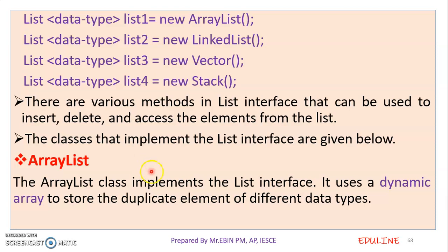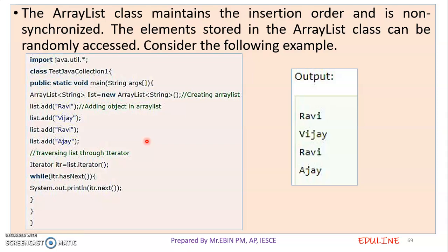The ArrayList class uses a dynamic array that we create. The List Interface will be implemented in the ArrayList class. If you implement the List Interface, the ArrayList class will be used. The main element is to add values in the ArrayList. Elements can be added to ArrayList on an index basis.